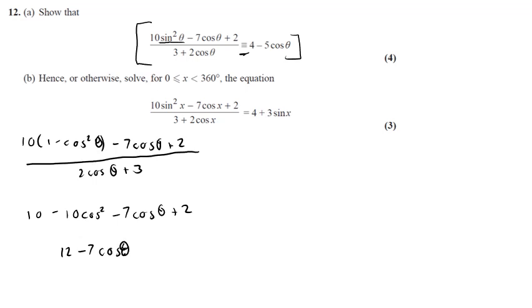Sorry, it's meant to be a theta. I've gone a bit wrong. Let me try again. Minus 7 cos theta minus 10 cos squared theta all over 2 cos theta plus 3.